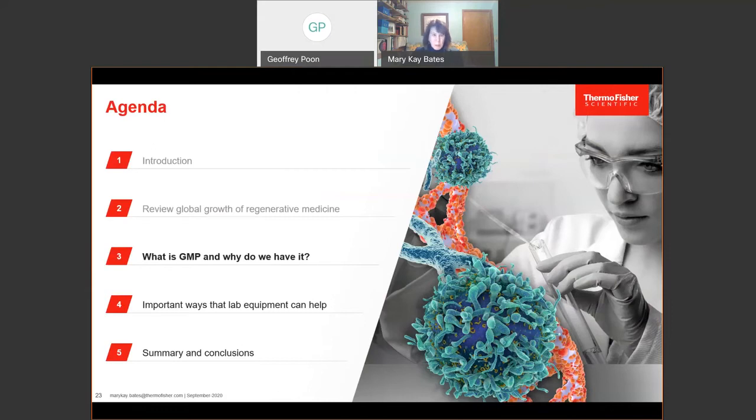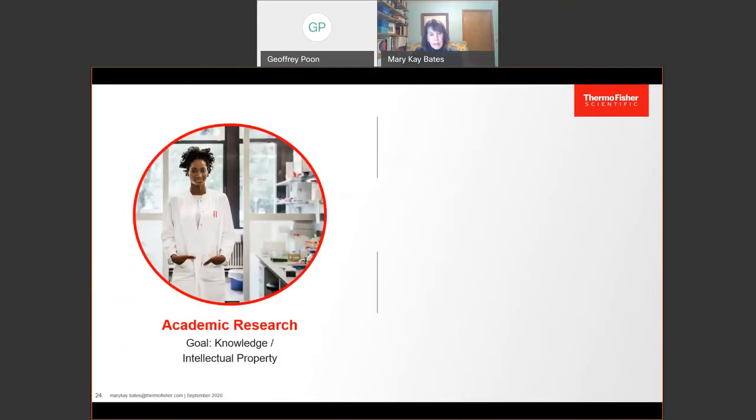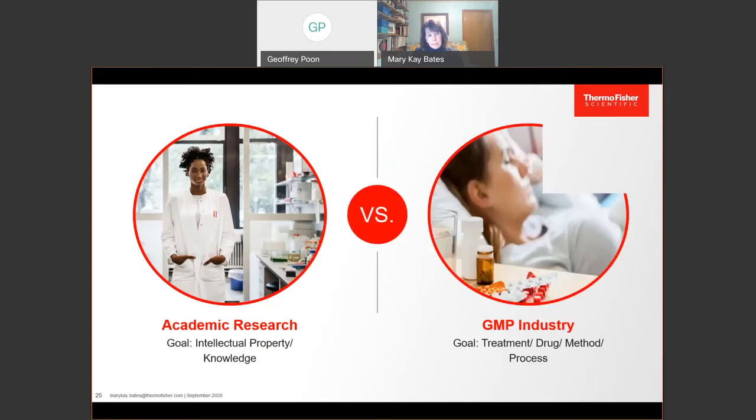So with all of that excitement, now let's turn to talking about GMP. I want to take a step back and look at what is different as you transition from an academic research lab to GMP and why do we have GMP. If we look at the big picture, in academic research, the goal is knowledge. You are studying a system to learn more about it. But in industry working under GMP, the goal here is to produce a product such as a therapeutic treatment, a drug, a method, or a process. This goal requires a lot more safeguards because your goal is something to improve human health.